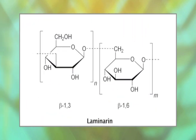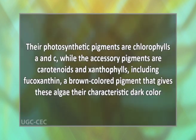The food reserves of these algae are carbohydrate polymers known as laminarin. Their photosynthetic pigments are chlorophylls A and C, while the accessory pigments are carotenoids and xanthophylls, including fucoxanthin, a brown color pigment that gives these algae their characteristic dark color.